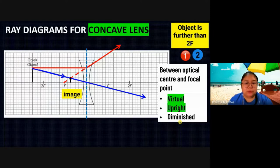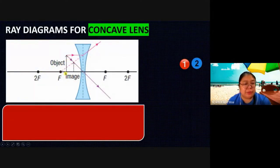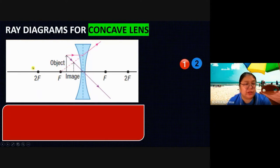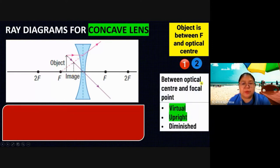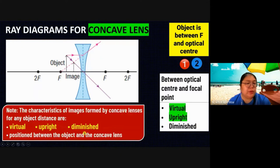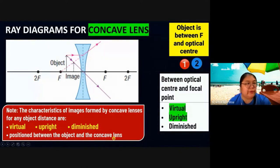Looking at the textbook example — when the object comes in toward F, you see the image is still in that same area but a bit higher. When the object goes further, the image becomes smaller; when the object comes nearer, the image becomes bigger. But the image still stays in the same area — cannot move. Conclusion: the characteristic image formed by concave lenses for any object distance is virtual, upright, diminished, and the position must be between the object and the concave lens.